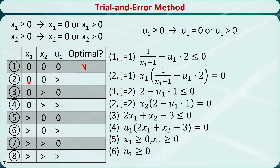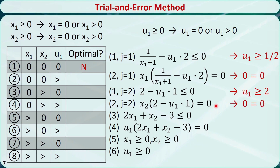The second combination is x1 and x2 equal to 0, and u1 greater than 0. This condition changes to u1 greater than or equal to 1/2. This condition changes to 0 equal to 0. This condition changes to u1 greater than or equal to 2. This condition changes to 0 equal to 0. This condition changes to negative 3 less than or equal to 0. However, this condition changes to negative 3 equal to 0, which is a contradiction.